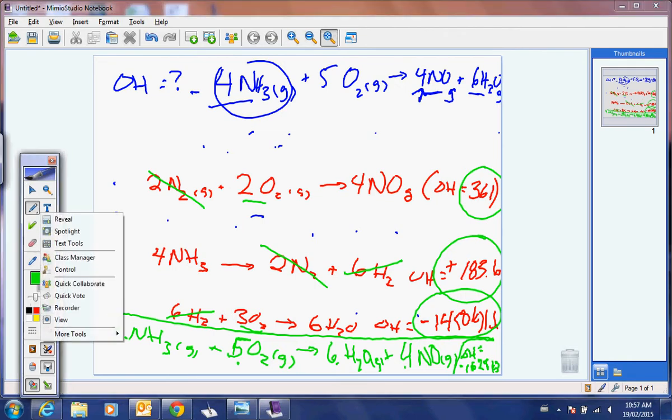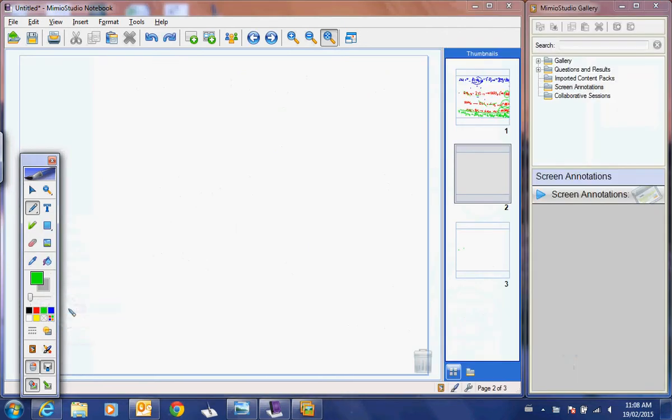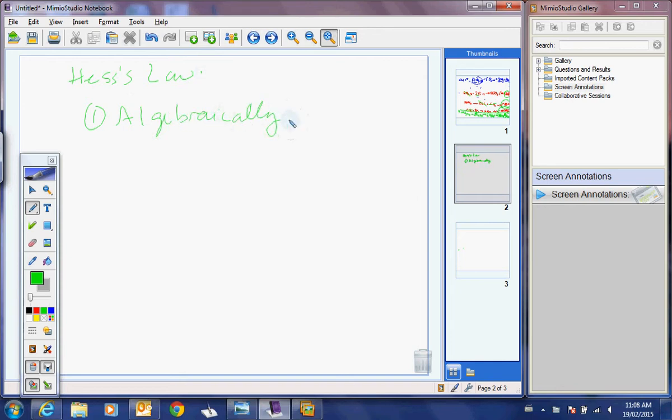So have a go at the, sorry, there's a negative there. So it's negative 361 plus positive 183 plus negative 1450 gives you still that answer because I looked it up at the back of the book as opposed to pushing it into my calculator. There are two ways of answering Hess's law. The first way is algebraically, which is what we've just done, right? It's what we've just done.